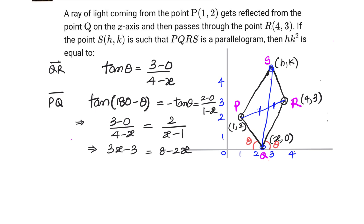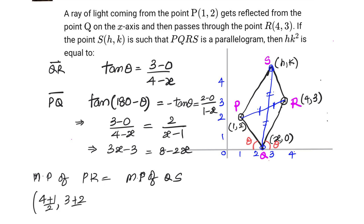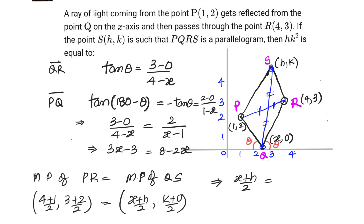The midpoint of PR is ((4 + 1)/2, (3 + 2)/2) = (5/2, 5/2). This equals the midpoint of QS, which is ((x + h)/2, k/2). Comparing x-coordinates: (x + h)/2 = 5/2, so x + h = 5. Since x = 11/5 = 2.2, we get h = 5 − 2.2 = 2.8, that is h = 14/5.